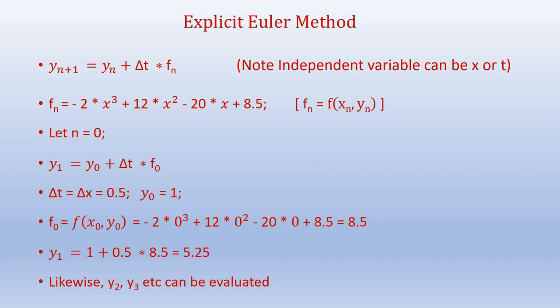For the first step, we set n = 0: y₁ = y₀ + Δx·f₀. With step size Δx = 0.5 and initial condition y₀ = 1, we evaluate f₀ = f(x₀, y₀). Since the y term is not present in the function in this case, we evaluate f₀ and obtain f₀ = 8.5. Then y₁ = 1 + 0.5 × 8.5 = 5.25. Likewise, y₂, y₃, etc., can be evaluated in subsequent steps.